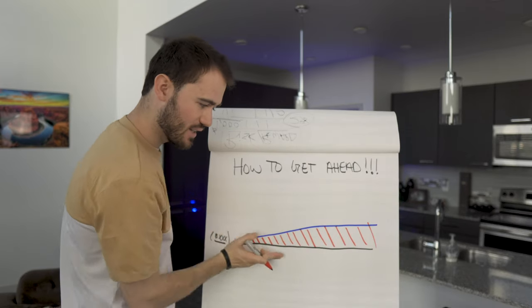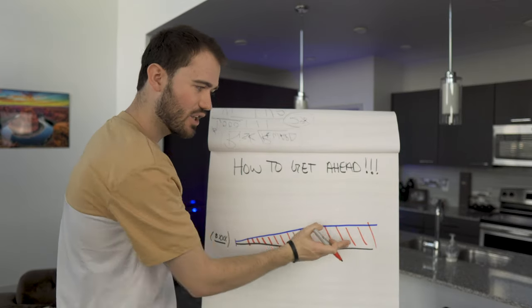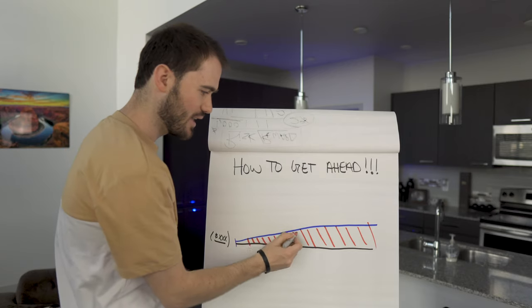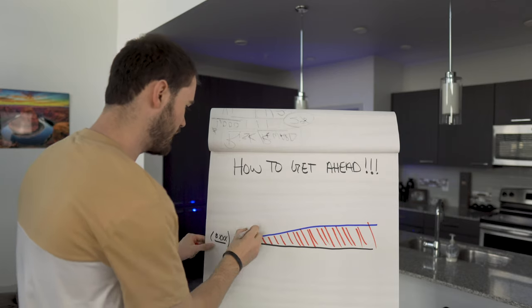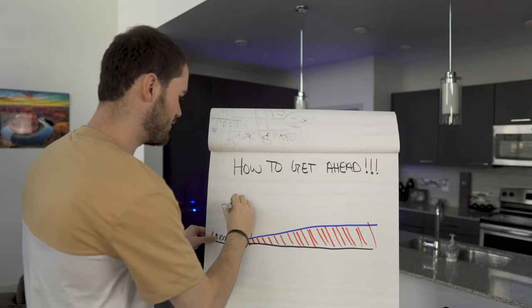So if the world is going up and you're baselining yourself and you're plateauing, you're not going up, what's happening? This red area occurs. This is what's called your deficit.